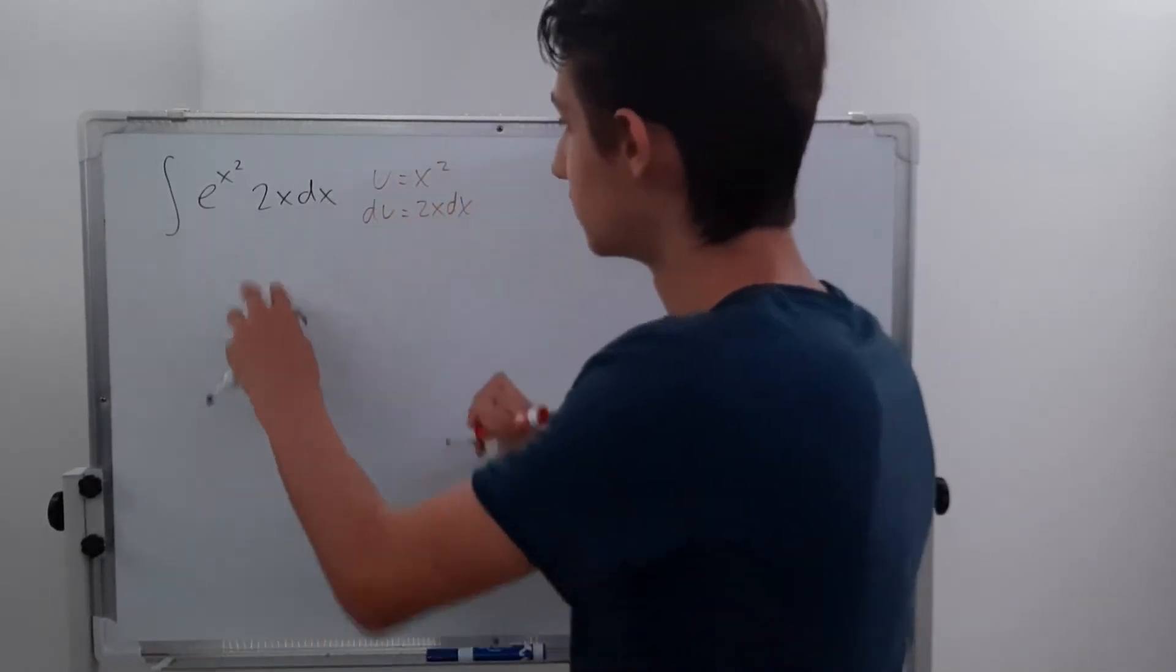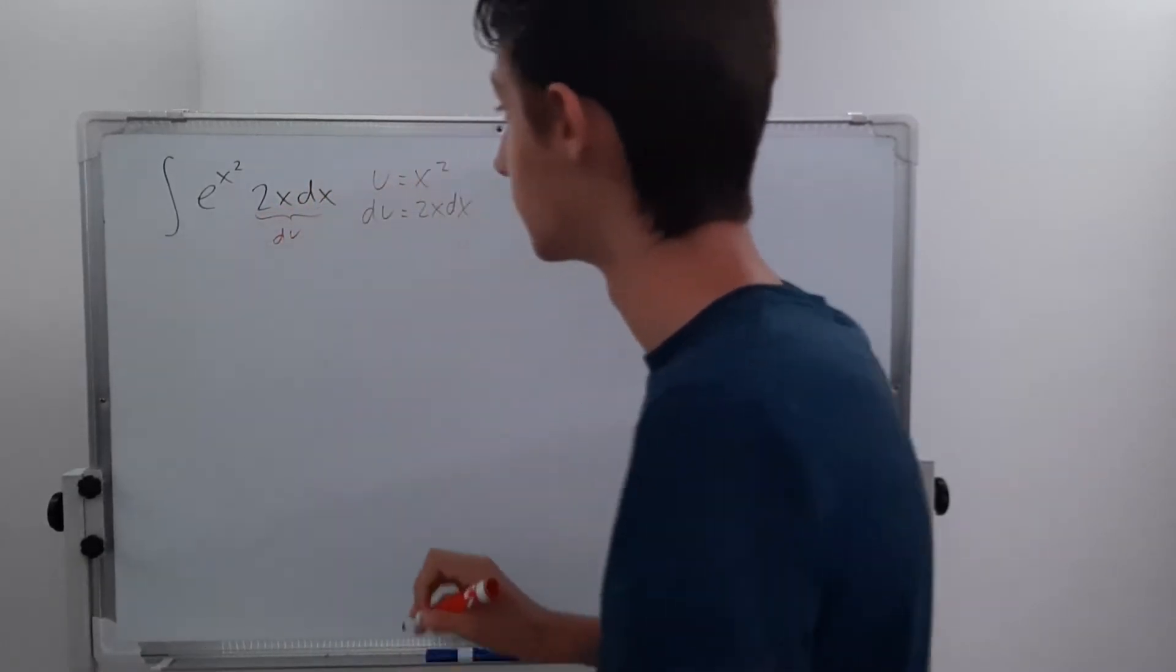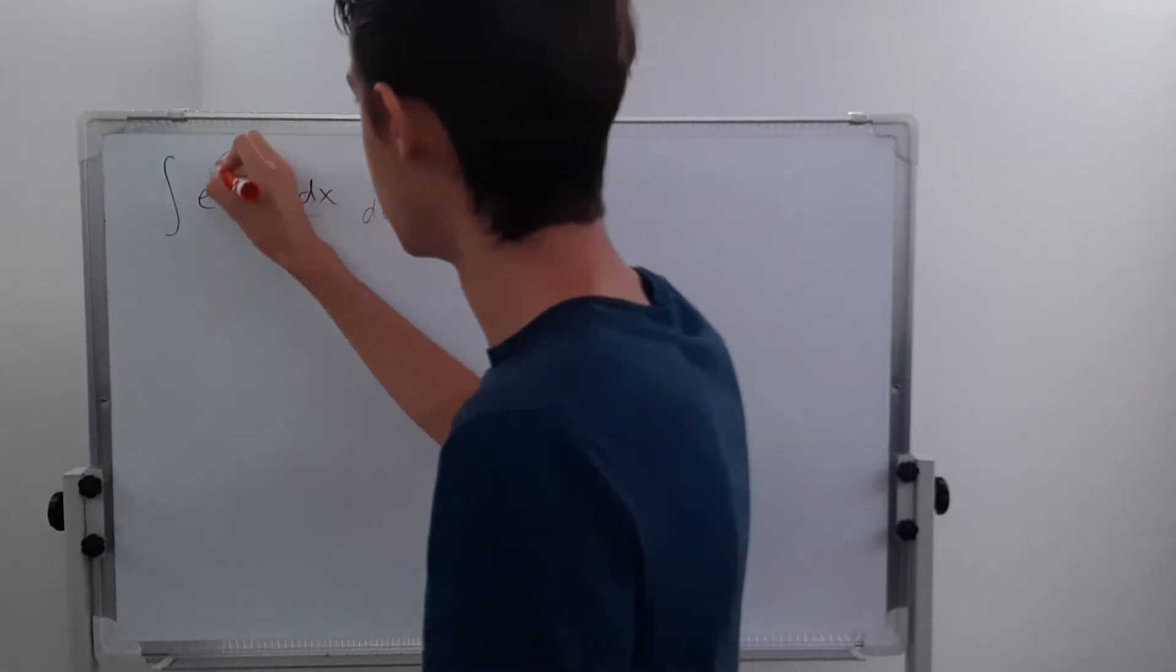And from here you can recognize that 2x dx is our du. And then up here we have our u.